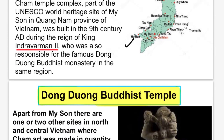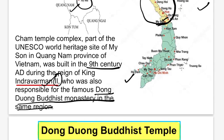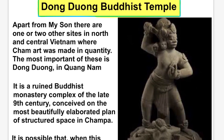The Cham Temple Complex was built in the 9th century AD during the reign of King Indravarman II. This same Indravarman II was also responsible for the famous Dong Duang Buddhist monastery in the same region near the My Son area. Since Buddhism is always an important topic for UPSC, we should know about Dong Duang as it was built by the same ruler Indravarman II.